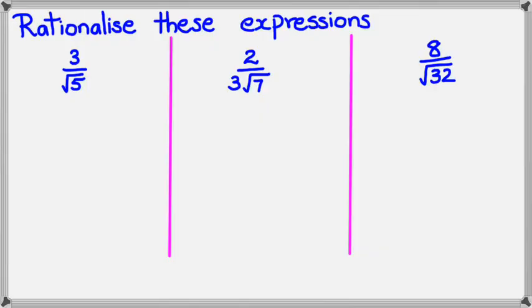Okay, here are three expressions that I'd like to rationalize. So the first one is 3 over square root of 5. We've got 2 over 3 times square root of 7, and finally 8 divided by square root of 32.